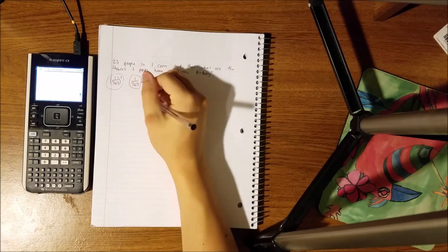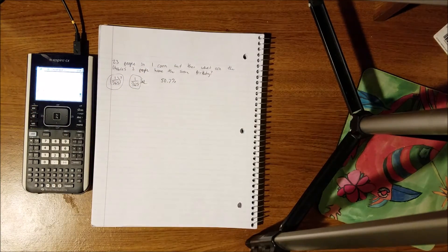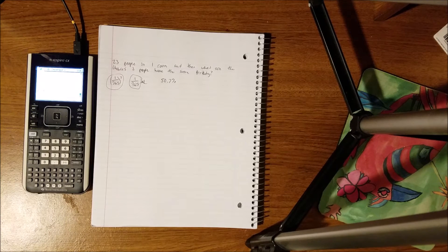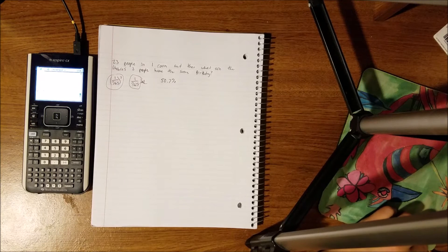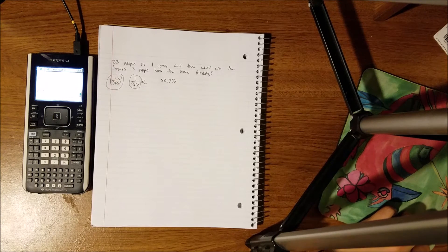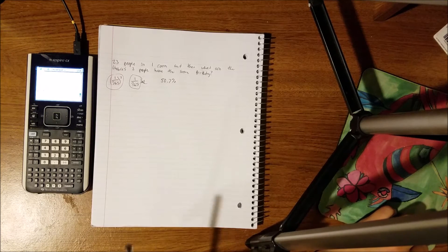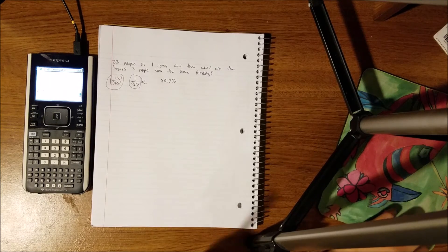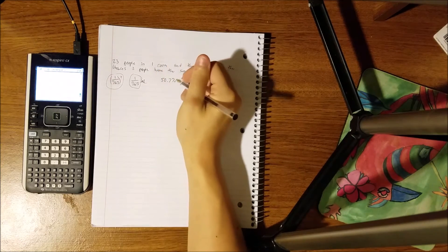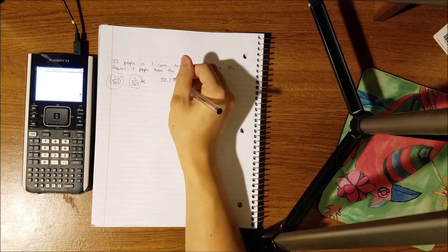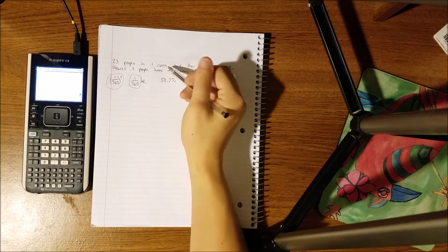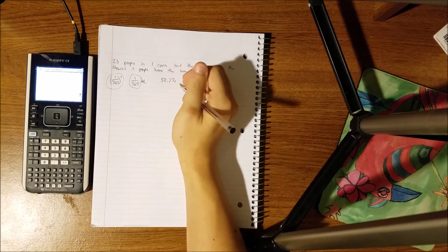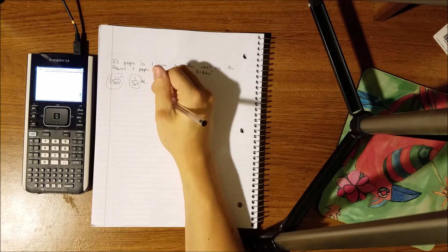So, what we're going to start off with is instead of seeing how many people have the same birthday, we're going to see the probability of two people not having the same birthday, and then we're going to do 1 minus that to find the percent chance of two people having the same birthday.